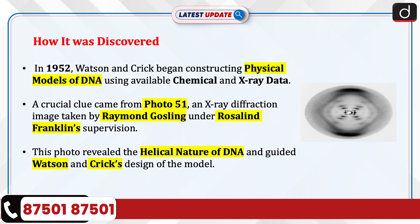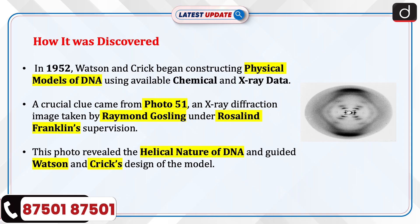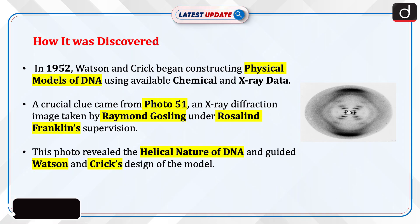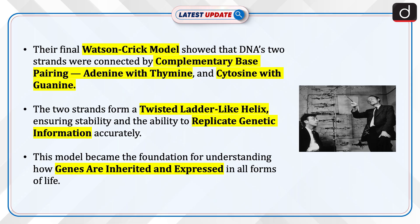This photo revealed the helical nature of DNA and guided Watson and Crick's design of the model. Their final Watson-Crick model showed that DNA's two strands were connected by complementary base pairing — adenine with thymine and cytosine with guanine. The two strands form a twisted ladder-like helix, ensuring stability and the ability to replicate genetic information accurately. This model became the foundation for understanding how genes are inherited and expressed in all forms of life.